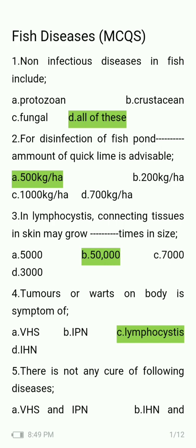For disinfection of a fish pond, what amount of quick lime is advisable — 500 kg, 200 kg, 1000 kg, or 700 kg? The answer is 500 kg.